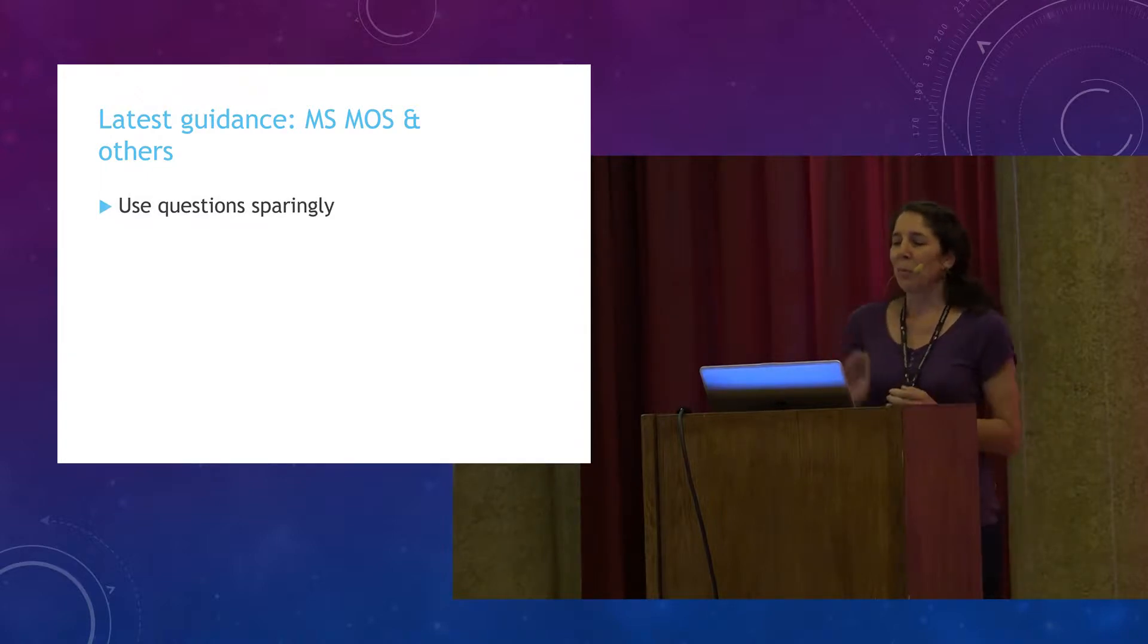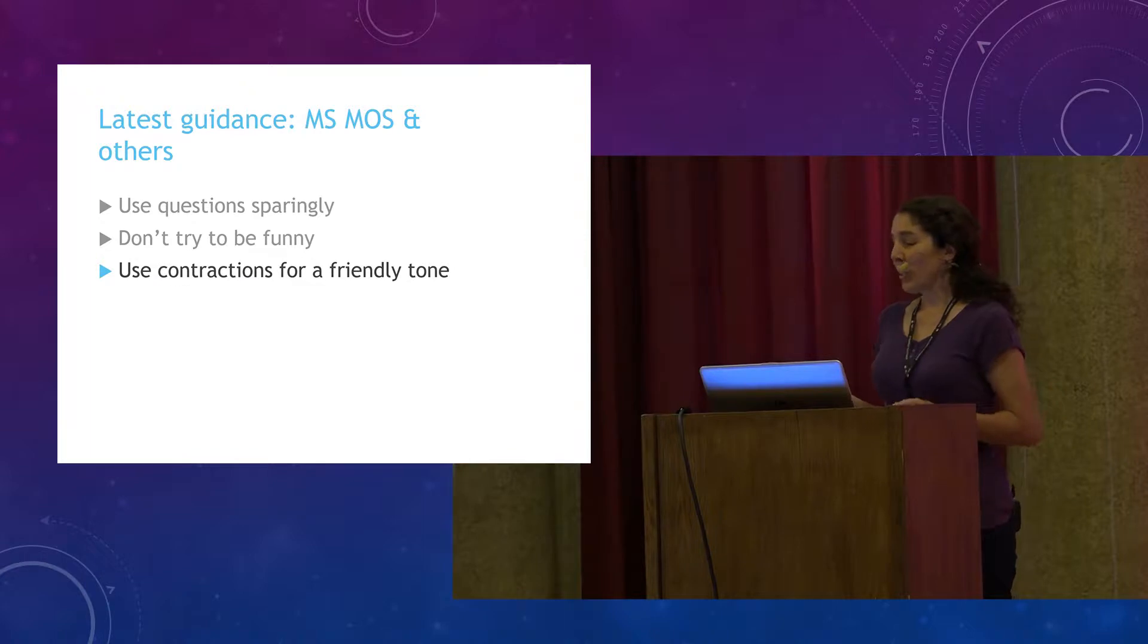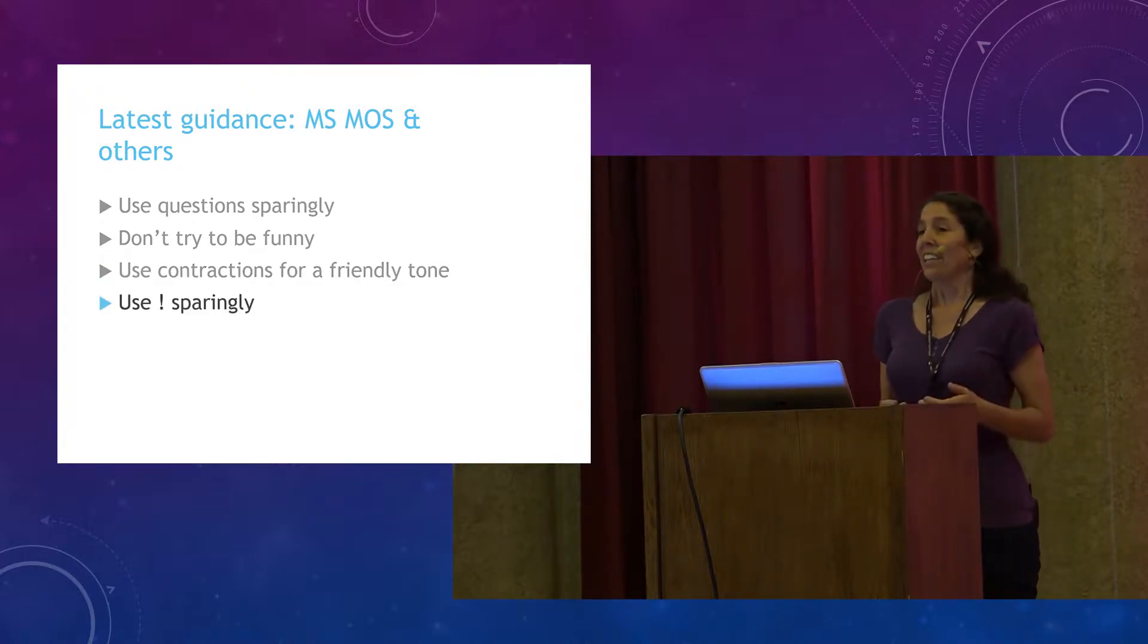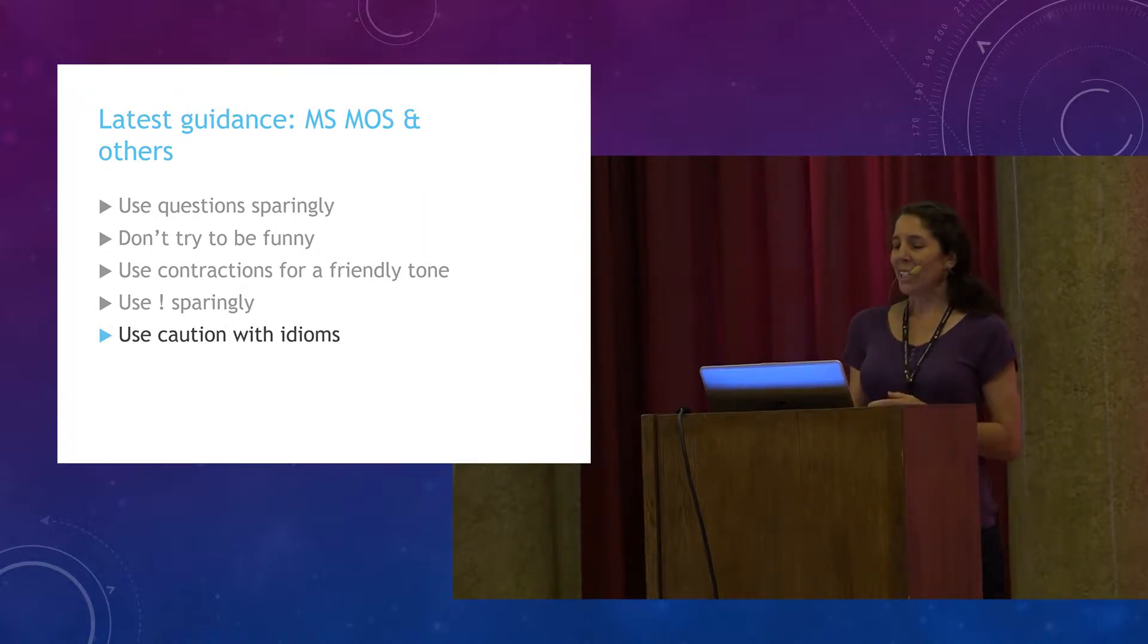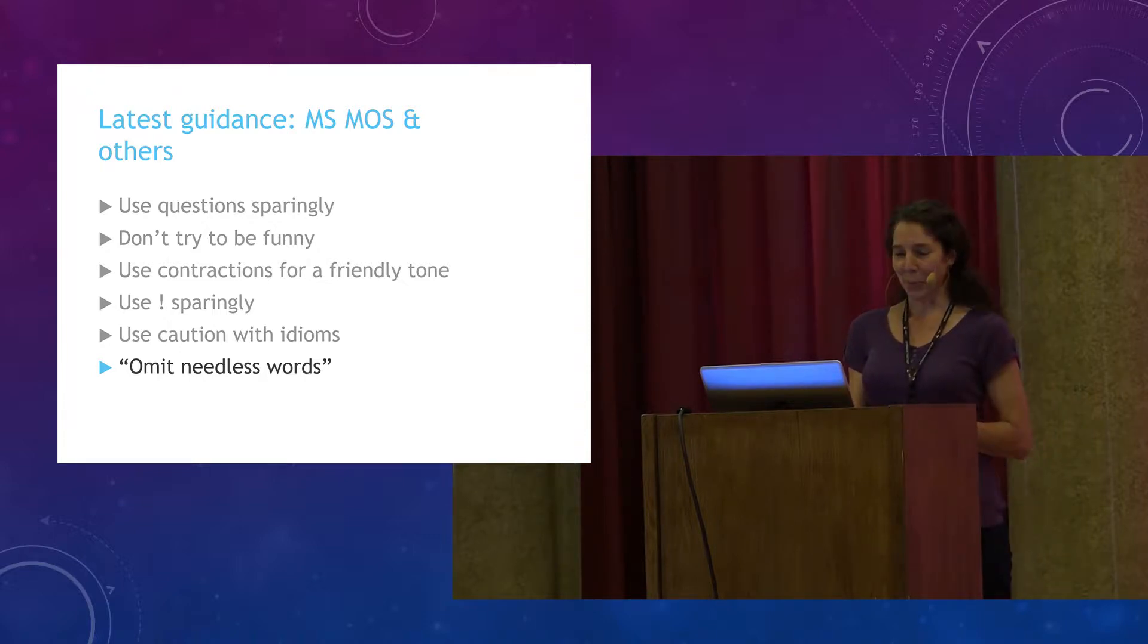So today we'll compare what writers are saying and doing with guidance from old school mentors in the Microsoft Manual of Style. Guidance like, use questions sparingly. Don't try to be funny. Use contractions to create a friendly conversational tone. Use exclamation points sparingly. And be careful with idioms and cultural references. They can get your docs into hot water. And of course, Bill Strunk's great advice to omit needless words.